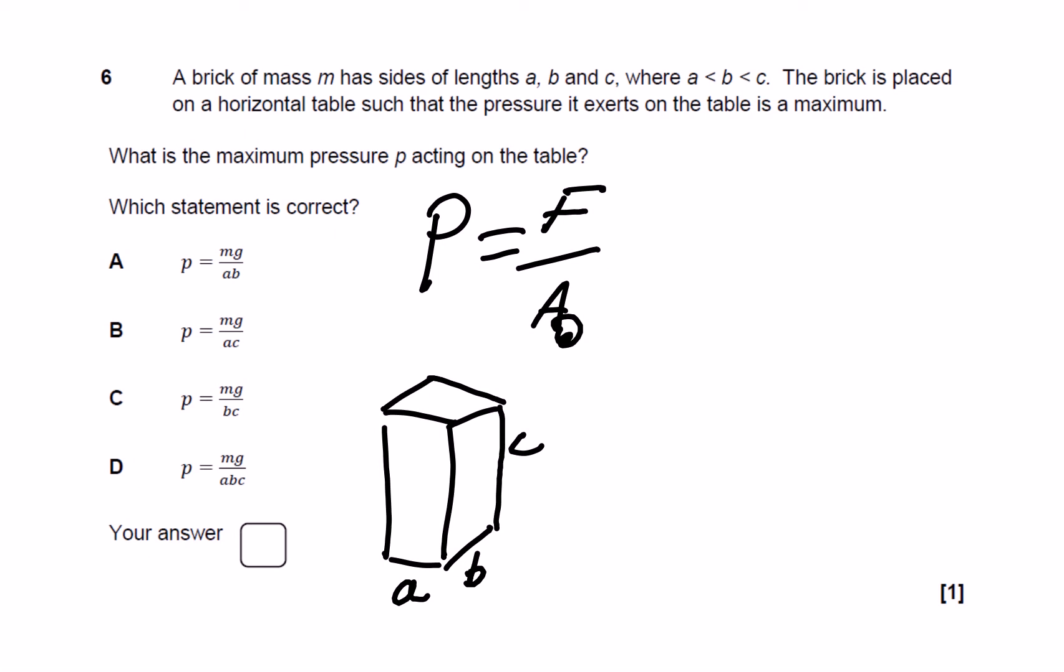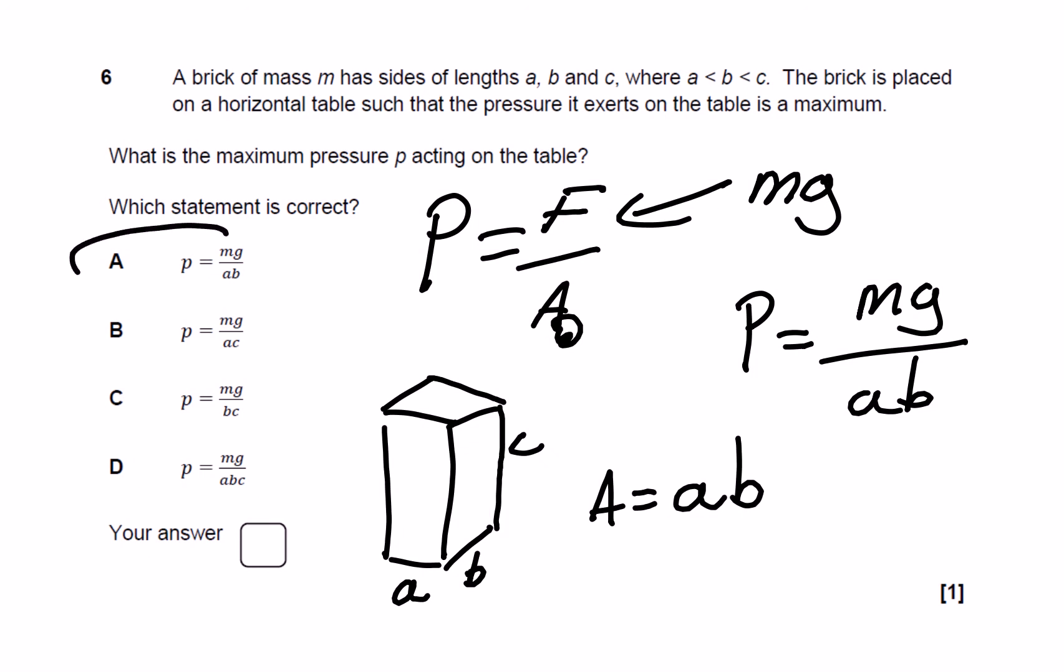Therefore, the area that's down on the ground would equal AB, and the force acting there will be MG. So therefore the pressure is going to be MG over AB, which if I come across there, that gives me answer A.